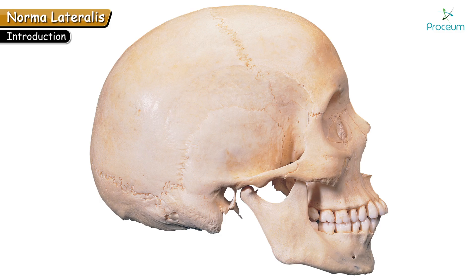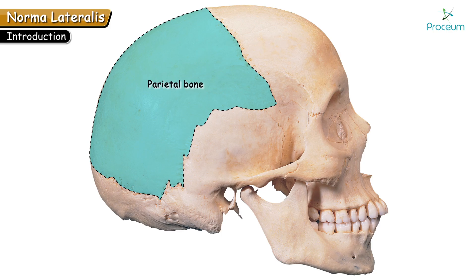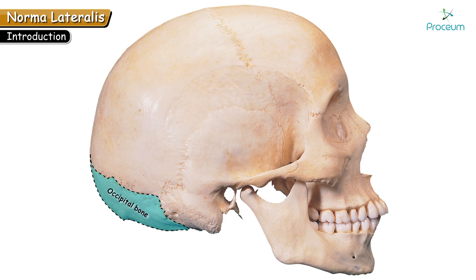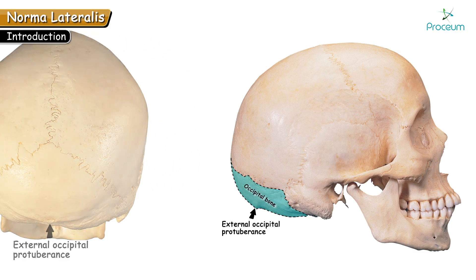Let's see the bones contributing to the formation of Norma lateralis. We shall begin with the forehead bone, which is called the frontal bone. Frontal bone is best viewed in Norma frontalis. Next to the frontal bone is the parietal, which is a quadrilateral bone, and the posteriormost bone is the occipital bone. The occipital bone shows a bony prominence known as the external occipital protuberance, which is best viewed in Norma occipitalis.